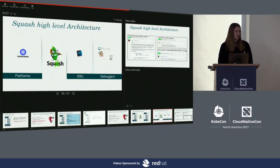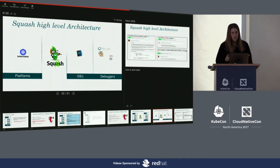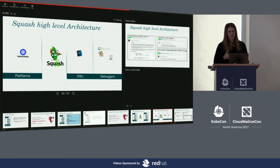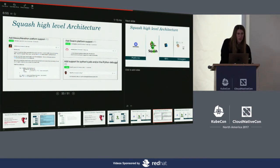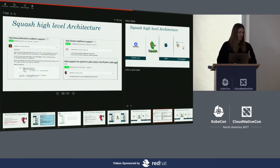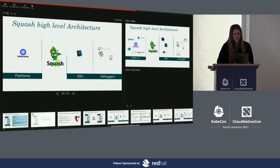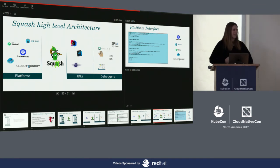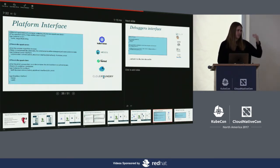When we open-sourced, it was just the two of us, so we had to create an MVP to get community feedback. We chose Kubernetes as the platform — no-brainer. We chose Visual Studio Code because it's what we use, and GDB and DLV as debuggers. When we open-sourced, the community really liked it. They asked us to add support for Marathon — a guy from Verizon wants to take that — and support for Swarm, more debuggers like Python, and more IDEs like IntelliJ.